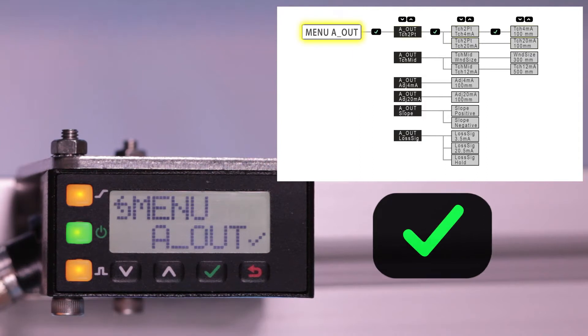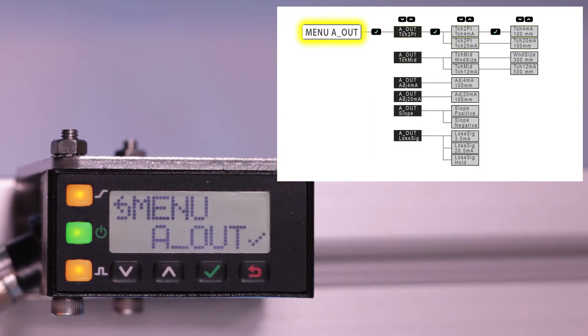Click the Enter button to access the Sensor menu. The first option within the Sensor menu is A-Out, the analog output. Click Enter to view the analog output submenu options.